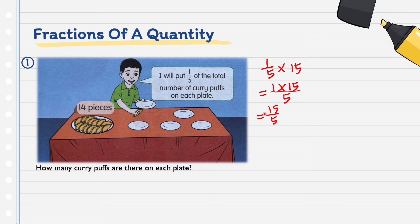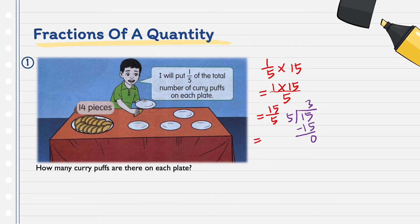15 over 5 ini, macam mana nak cari selesai? Kita akan bahagi. Per ini adalah bahagi, maksudnya 15 bahagi 5. 5 darab 3 sama dengan 15. Maksudnya, ada 3 biji curry puff di setiap pinggan. Ini jawapan dia. Ini adalah cara yang pertama.